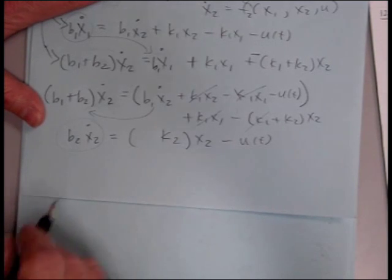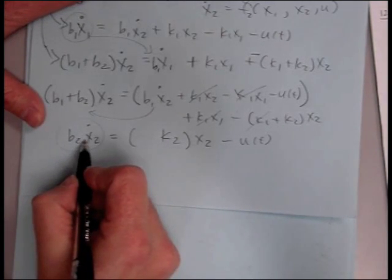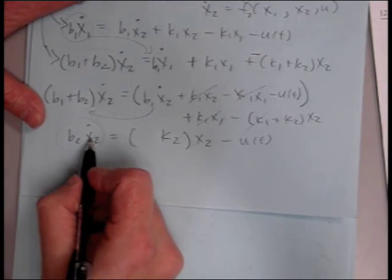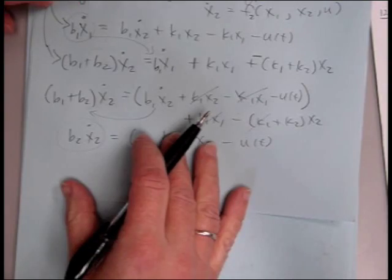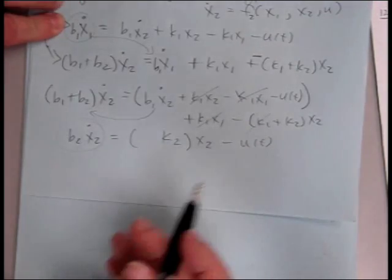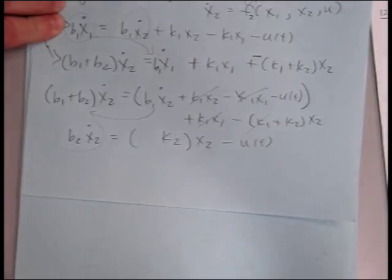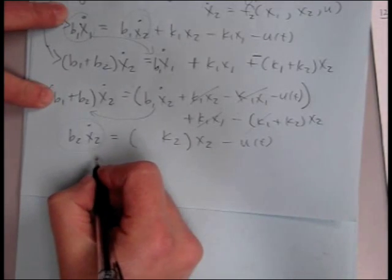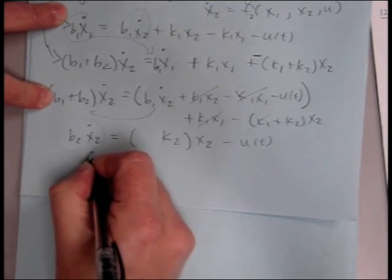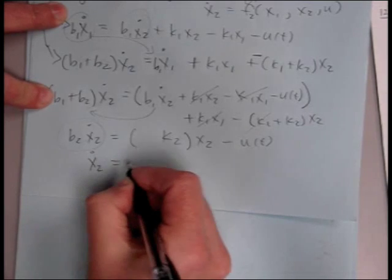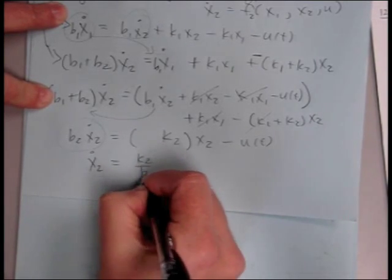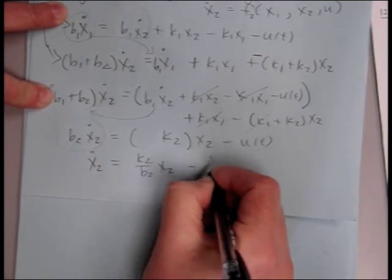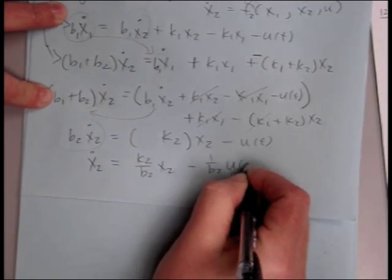So here's our, we'll divide through by b2 and we'll have a state equation. For our second state equation, we need to find x1 dot, and we can substitute now into our x1 dot equation. We can solve into our x1 dot equation for our x2. It looks like we're going to have to solve for x2.